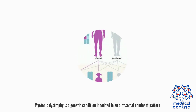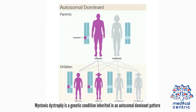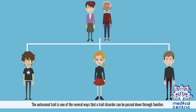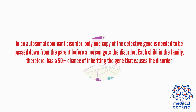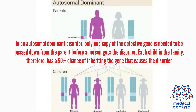Myotonic dystrophy is a genetic condition inherited in an autosomal dominant pattern. The autosomal trait is one of several ways that a trait or disorder can be passed down through families. In an autosomal dominant disorder, only one copy of the defective gene is needed to be passed down from the parent before a person gets the disorder. Each child in the family, therefore, has a 50% chance of inheriting the gene that causes the disorder.